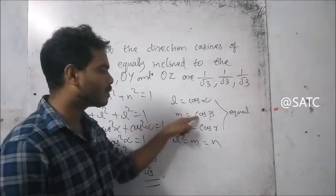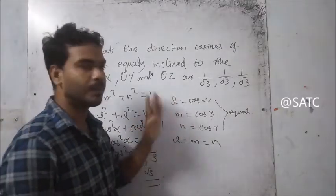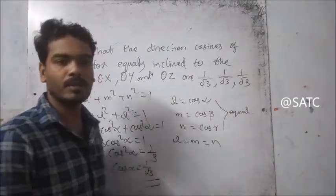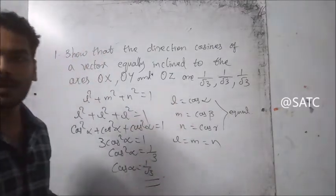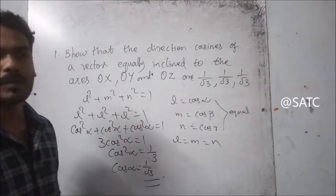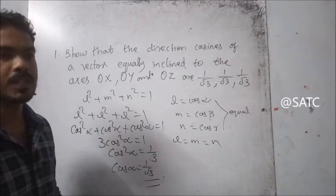Therefore, cos alpha equals cos beta equals cos gamma, and L is equal to one by root three.